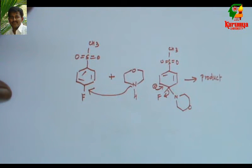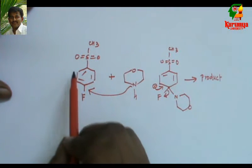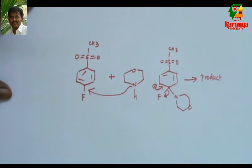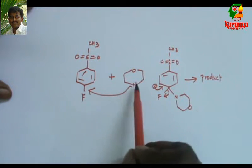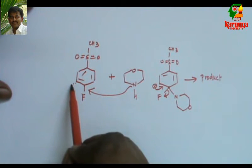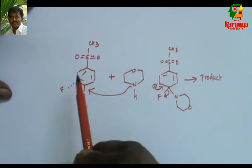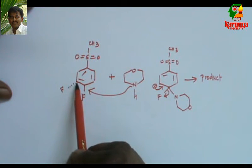If the leaving group is present in the ortho and para position to the electron withdrawing group, then only it can be displaced by the nucleophile. If it is in the meta position, for example if the fluoro is here, then this aromatic nucleophilic substitution will not take place because during the resonance structure we will not get plus charge here.